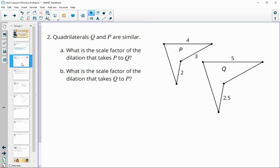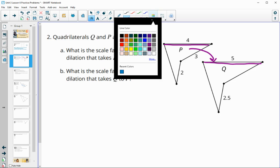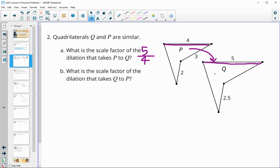Number two, quadrilateral P and Q are similar. What's the scale factor that would take P to Q? So P is the original and you're going to Q. Remember that you need to take the new length divided by the original length. So that's going to give us the scale factor taking P to Q. And then if we wanted to do the scale factor that would take Q to P to go backwards, now our new length would be four and our original length would be five.